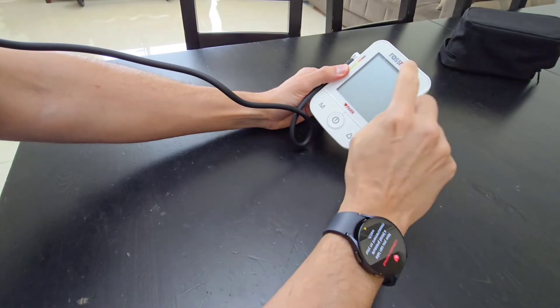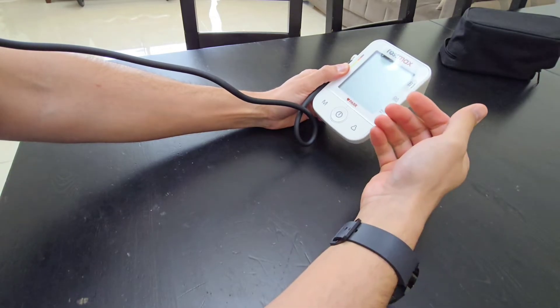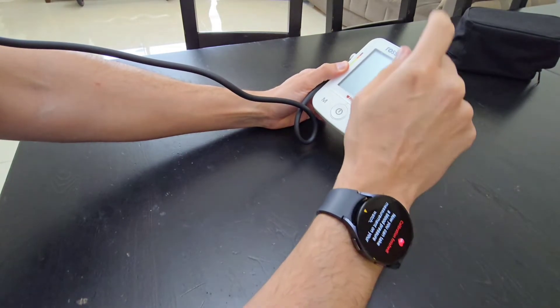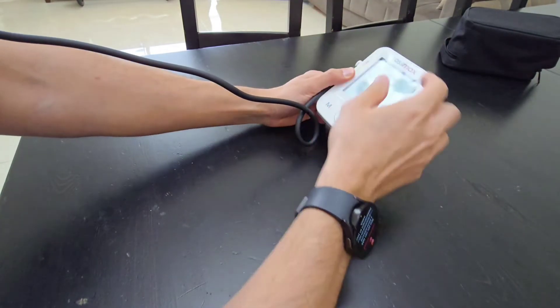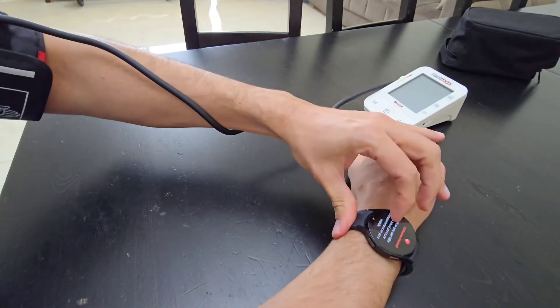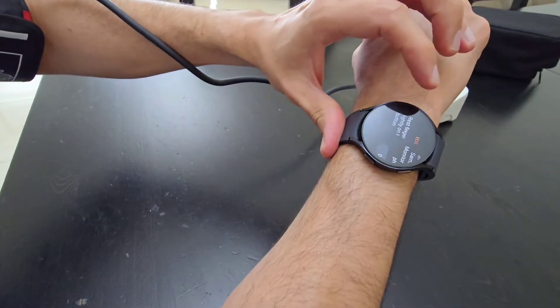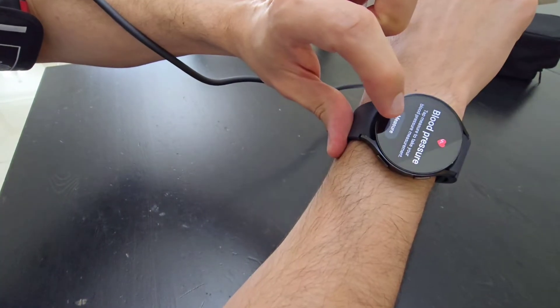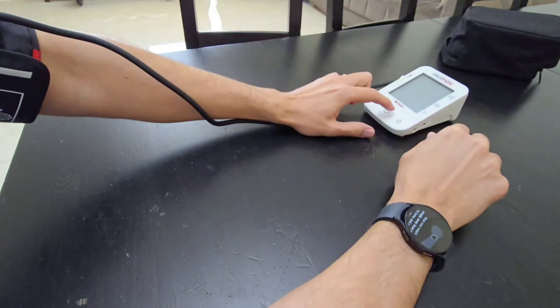I finished calibrating the watch with the Rosmax monitor and I'm going to go ahead and test the blood pressure before the workout and then after the workout. Let's go ahead and test it before the workout. So let's go to blood pressure. Let's start. Measure. Turn it on.